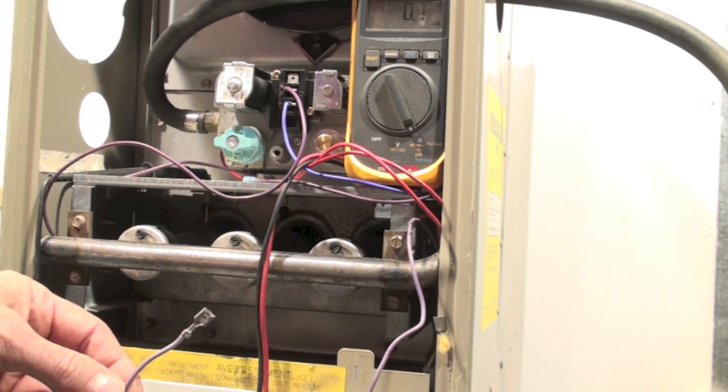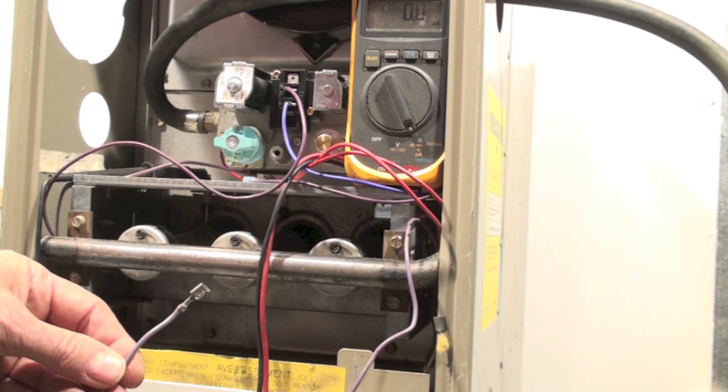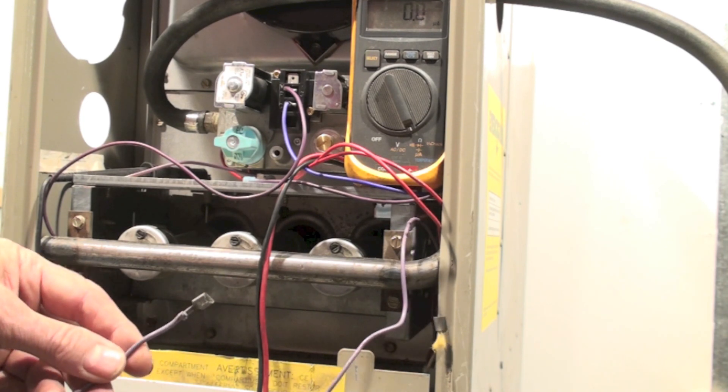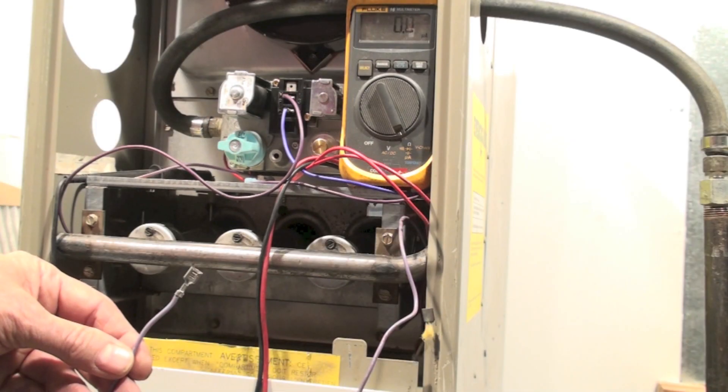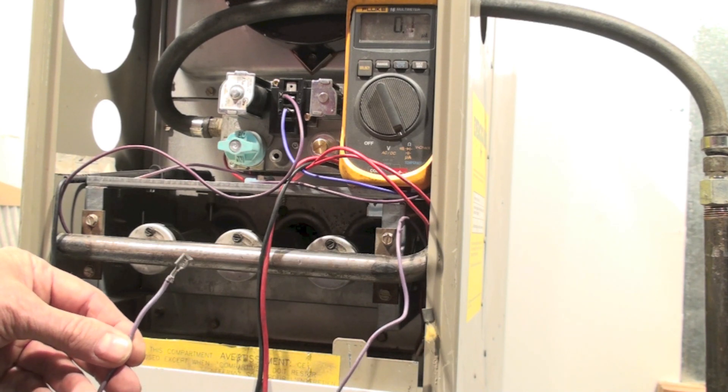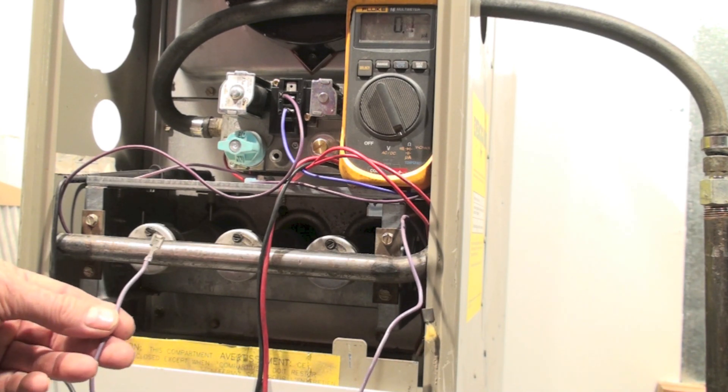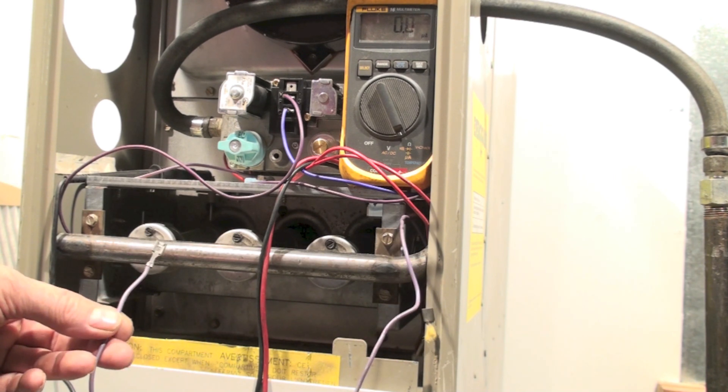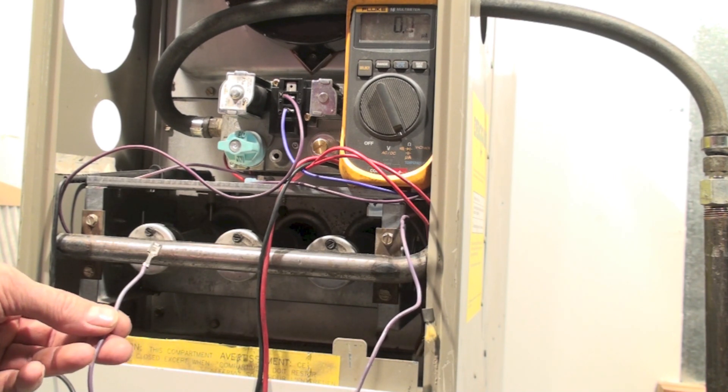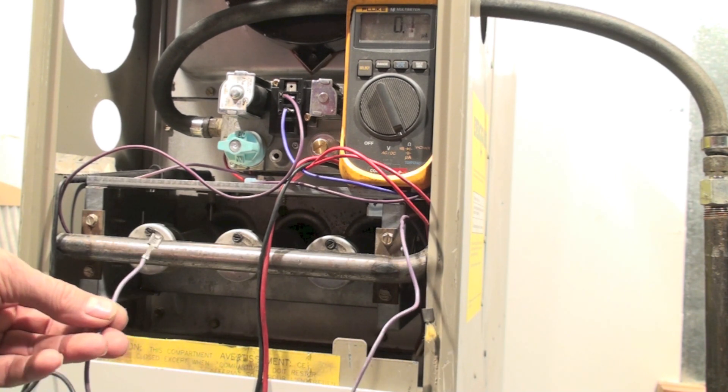We're in post purge now. And let's see if it tries again. Okay, the fan's gone off, the inducer's not trying anymore. It's gone into hard lockout. So you've proven that the flame safety control, which we call it an IFC board.